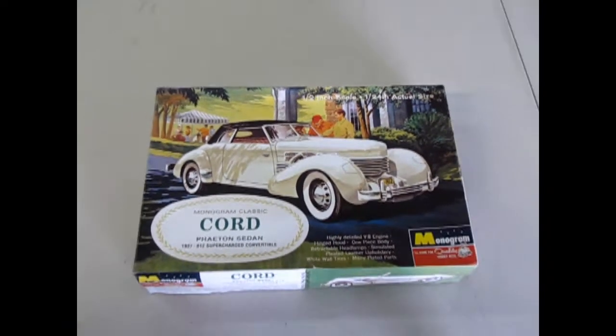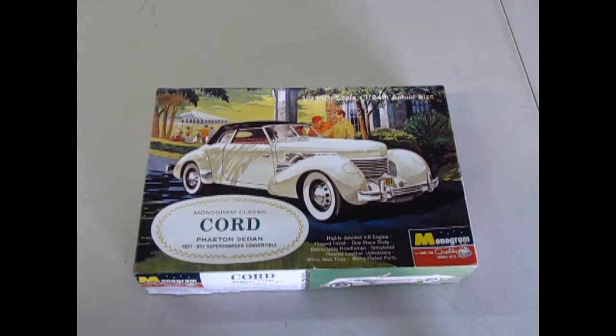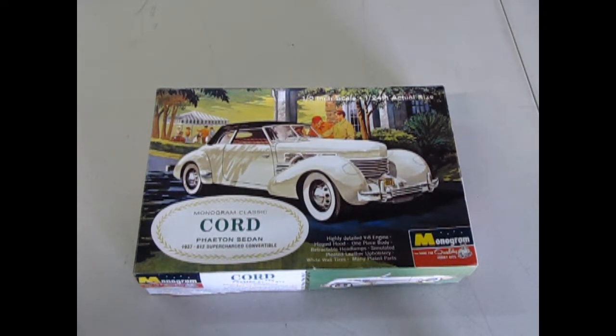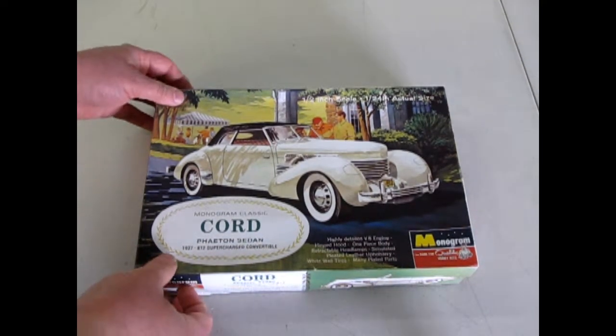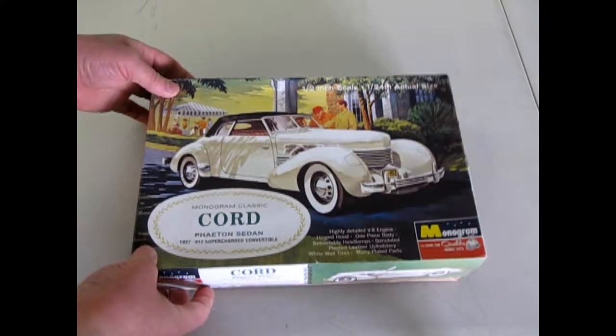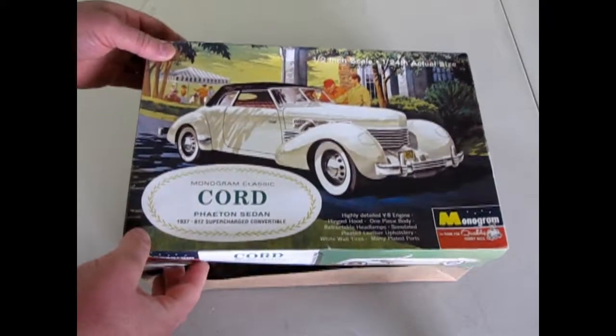And now we turn back our radio dials to 1937 and we get to open up the box on the Monogram Classic Cord Phaeton Sedan, the 1937 812 Supercharged Convertible. Now this box is very nice featuring the original artwork although it is a newer kit.